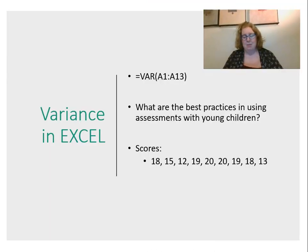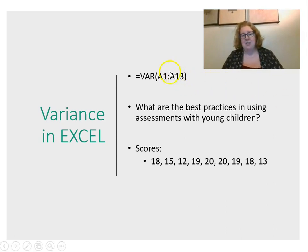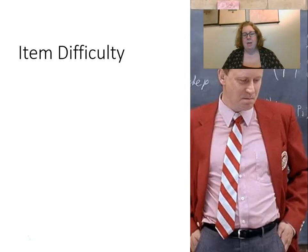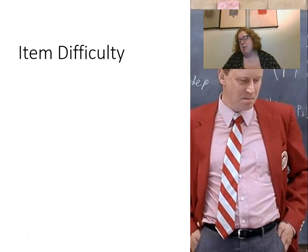Basically, item variance is how far apart the scores are spread. The formula in Excel is =VAR, and then the range of scores — for example, A1 through A13 representing rows 1 through 13 in a column. In this example, the variance is 9.11.